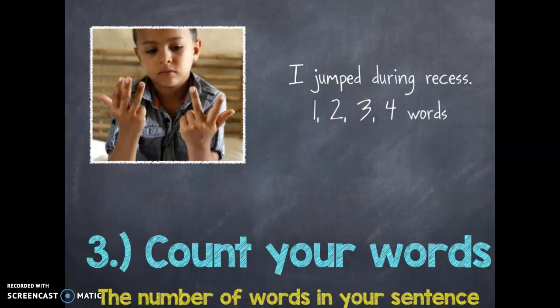Step three: now we're going to count the words in our sentence. So I'm going to say my sentence out loud and then count on my fingers how many words it is. My sentence is: I jumped during recess. That is one, two, three, four words. Remember that.